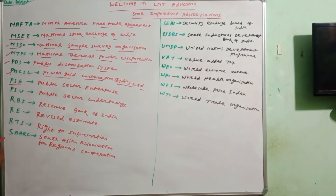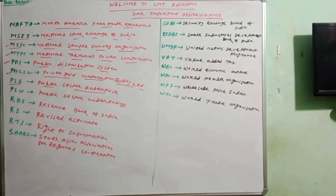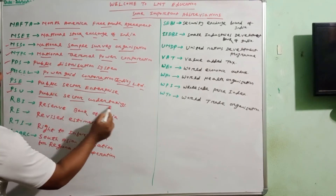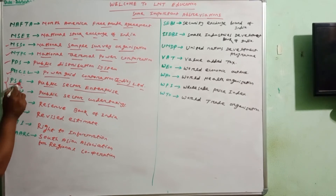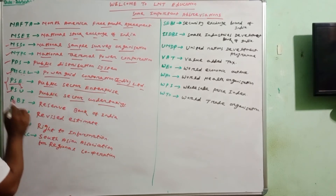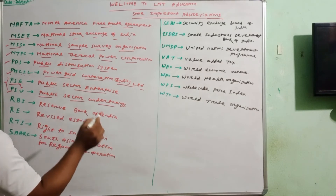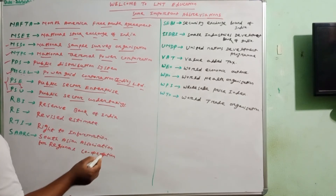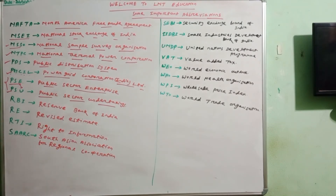PSE means Public Sector Enterprise. PSU means Public Sector Undertaking. Note that PSE and PSU are different — the letters E and U differentiate them. Examples of PSU companies include HAL, IOCL, and HPCL. RBI means Reserve Bank of India. RE means Revised Estimate — BE is Budget Estimate and RE is Revised Estimate.